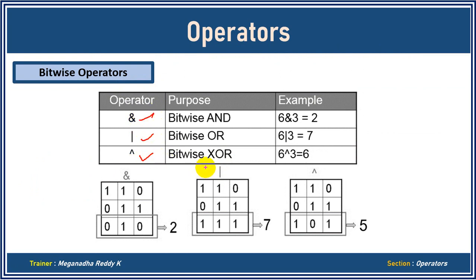For bitwise AND, the two operands must be two numbers. Number 6 will be converted to binary and number 3 will be converted to binary. One is considered as true and zero is considered as false. AND means both should be true for the result to be true. So true AND false is false, true AND true is true, false AND true is false — AND will be true only if both are true. So here the result bits are false, true, false.